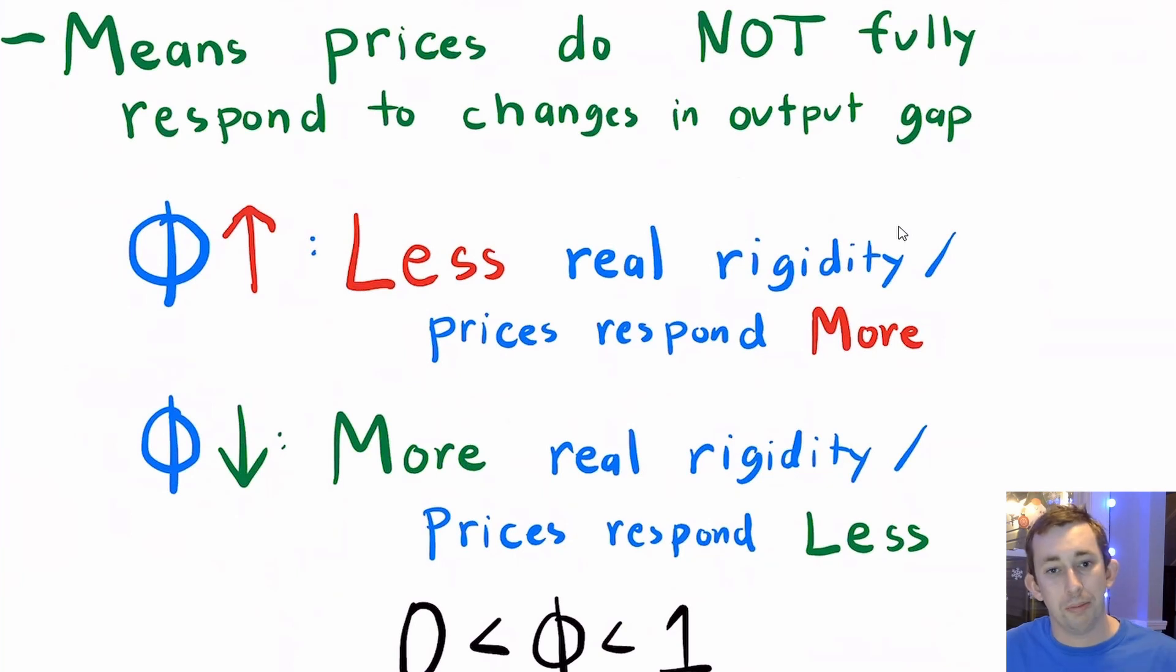There's some ideal change in price that every firm should do, but that doesn't happen. We say that prices are sticky, there's some slowness in adjusting to those optimal prices. And the measure of that slowness or that responsiveness to changes in the output gap on prices is what we call the real rigidity parameter.